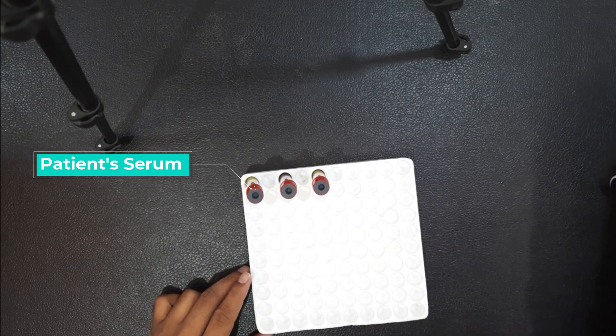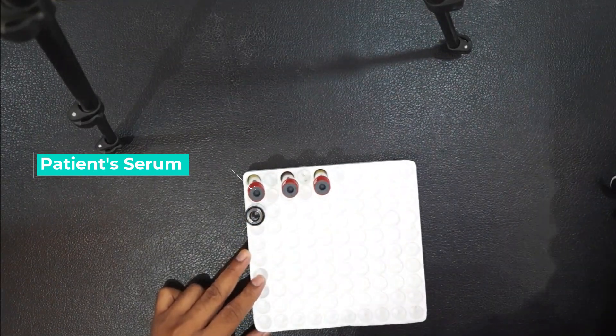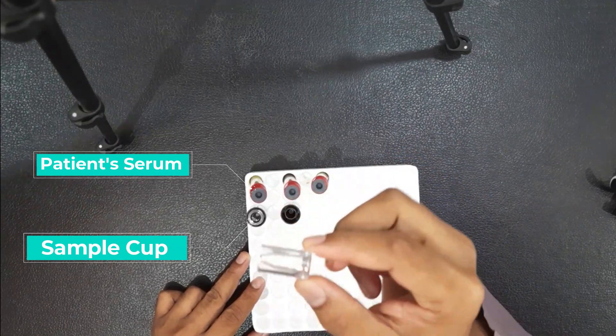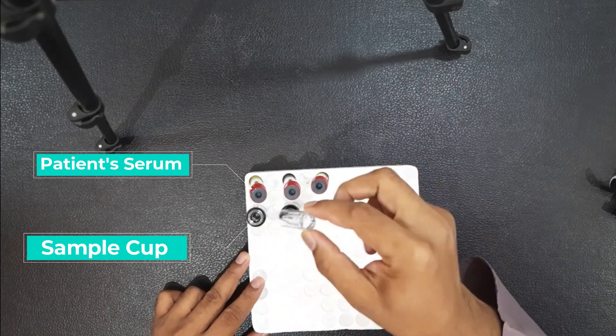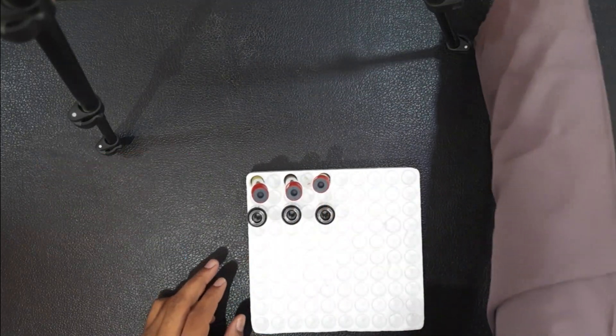Serum is obtained after centrifuging the patient's venous blood in a non-EDTA tube. Here we collected serum from three distinct patients, and in front of each we set a sample cup that would later be placed in an analyzer machine.